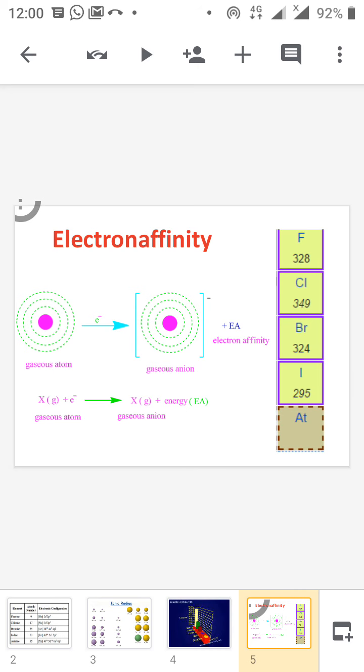For fluorine, the electron affinity is 328. This is mainly due to the small size of the atom. As we move to chlorine, the size is larger, so the electron affinity is also higher.